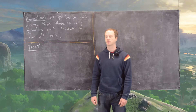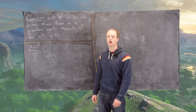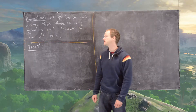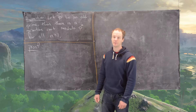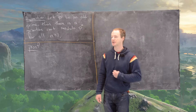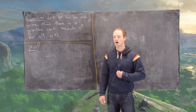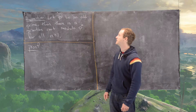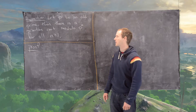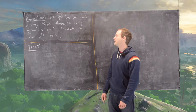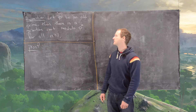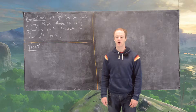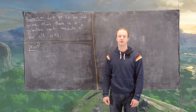We're continuing to work through classifying all natural numbers that have primitive roots. We have a big proposition here which almost brings us to the end of this: let p be an odd prime. Then there is a primitive root modulo p^n for all n greater than or equal to 1.